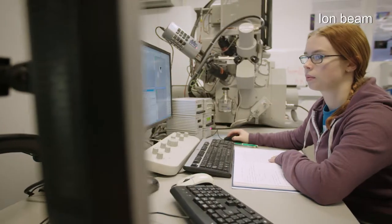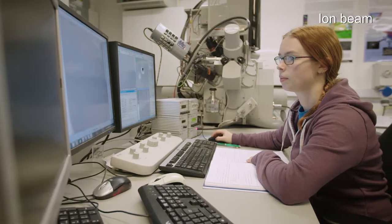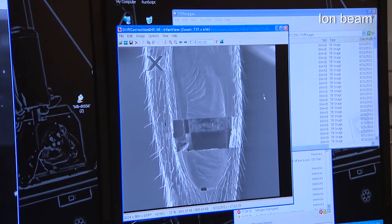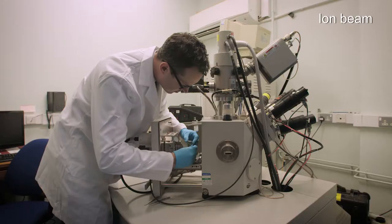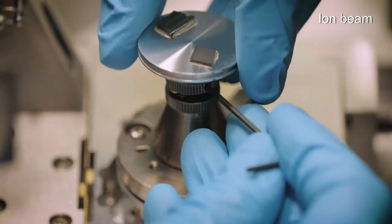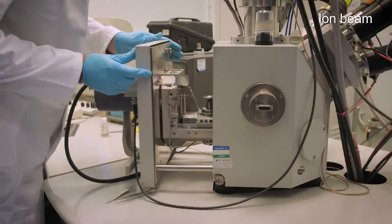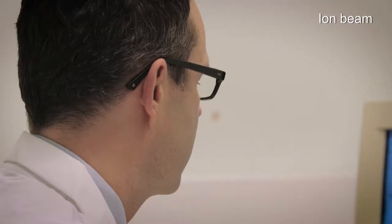Thirdly we have ion beam systems. The focused ion beams can be used for high precision milling and ultra thin foil sample preparation. While secondary ion mass spectrometry is another compositional analysis tool telling us what elements our samples are made from.